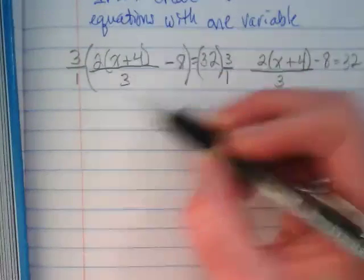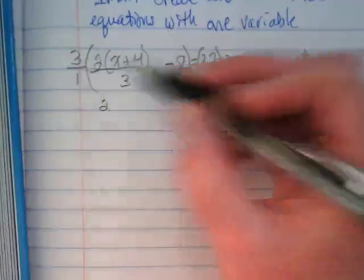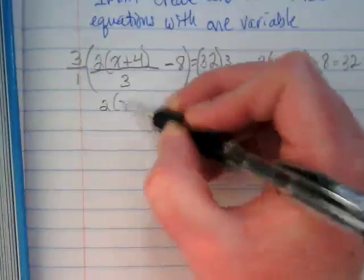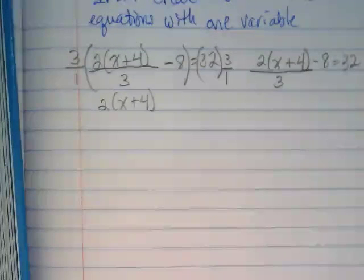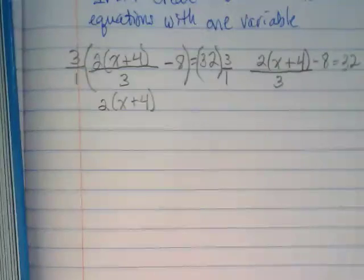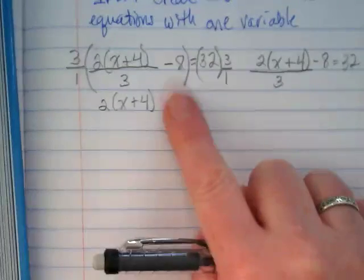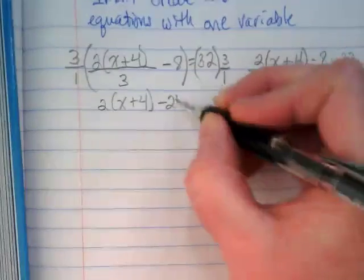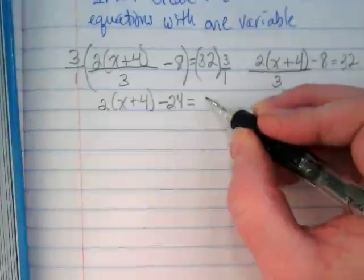So this whole thing here is what's being divided by 3, so it stays as is, because when I multiply all of this by 3, and then divide by 3, it goes back to 2 times x plus 4. Why? Because 3 over 3 is 1, and if you multiply anything times 1, you get the same thing. Does that make sense? This 8 is not divided by 3, so we have to multiply that 3 times that negative 8, and we're going to get negative 24. On the right side, 32 times 3 is 96.